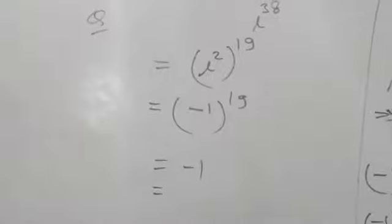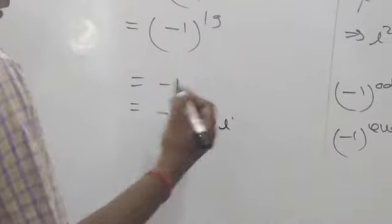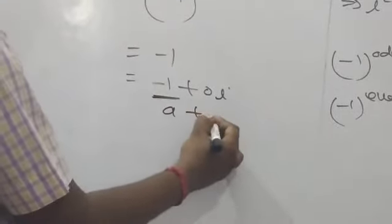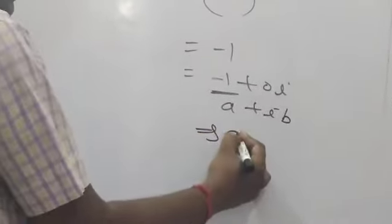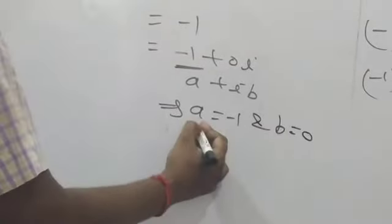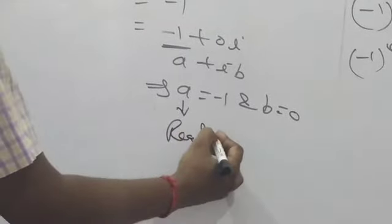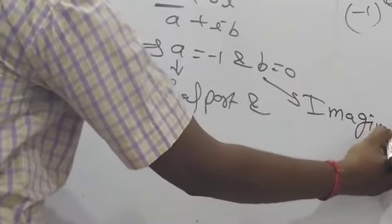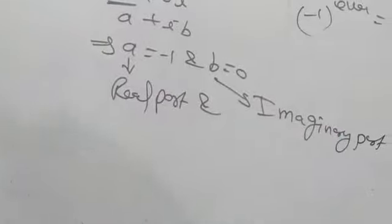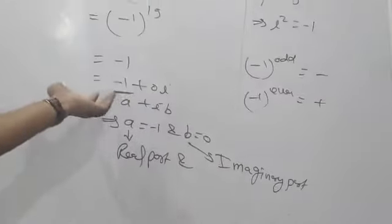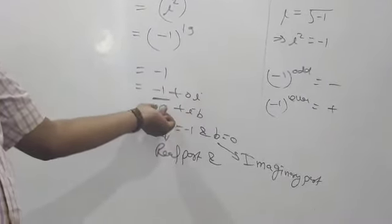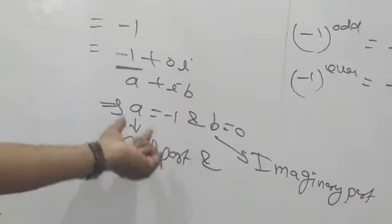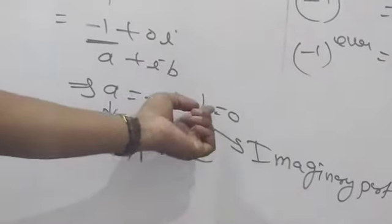Then we can write -1 as -1 + 0i, which is in A + iB form, where A = -1 and B = 0. So -1 is the real part and 0 is the imaginary part of the complex number.